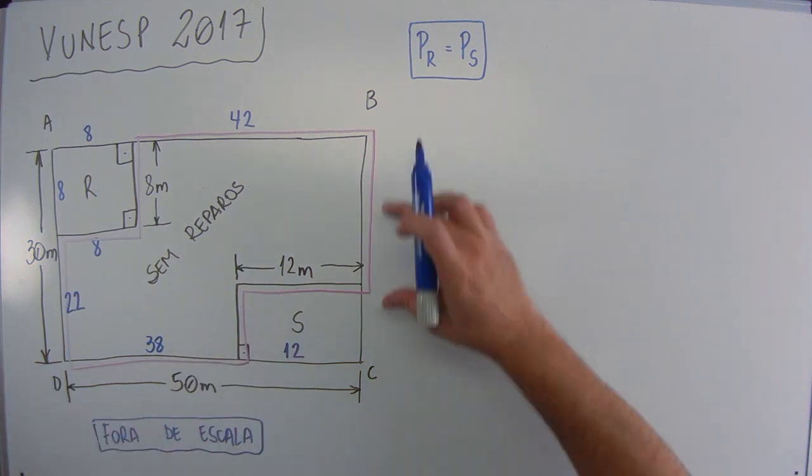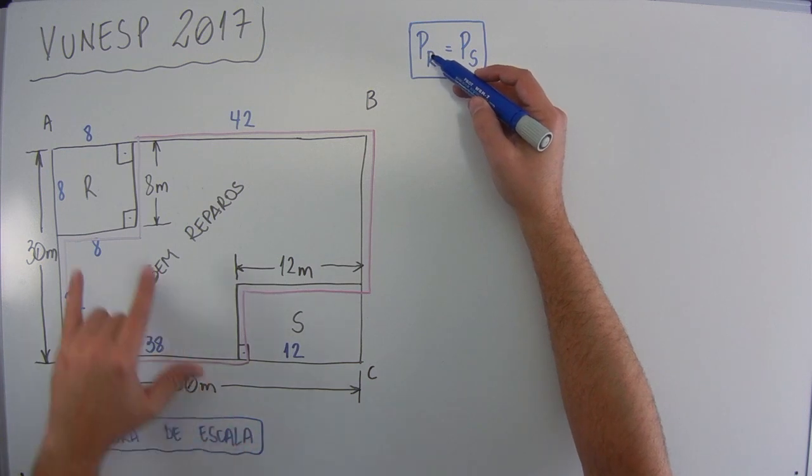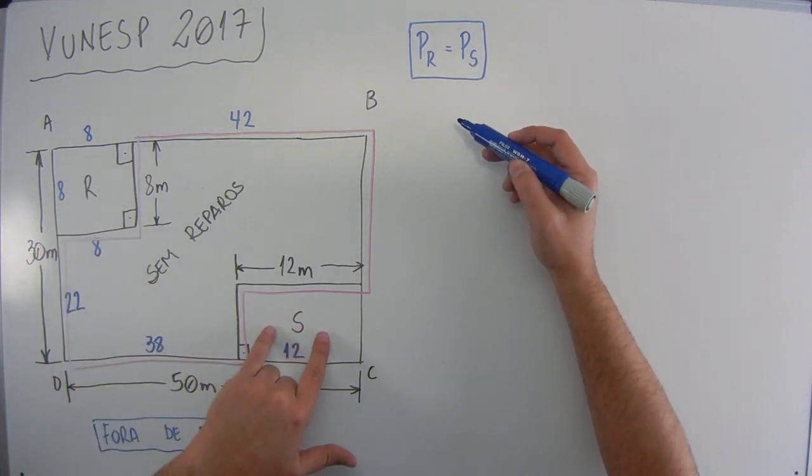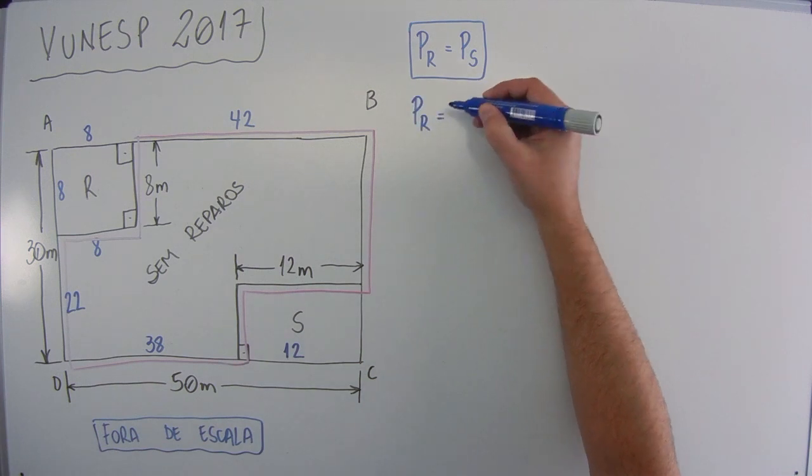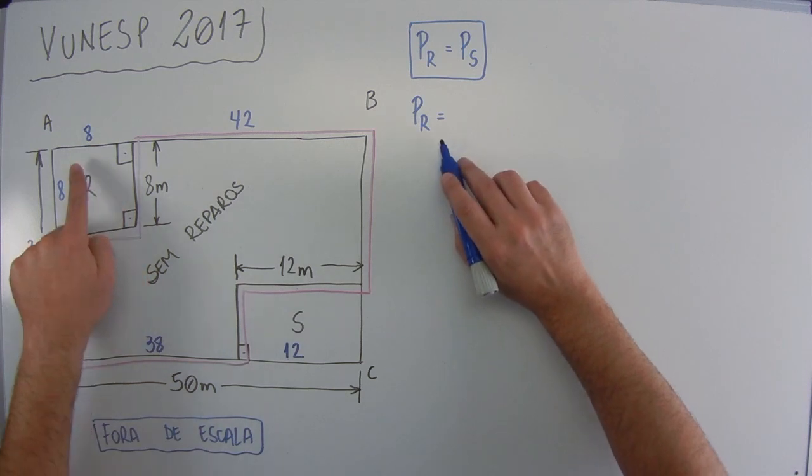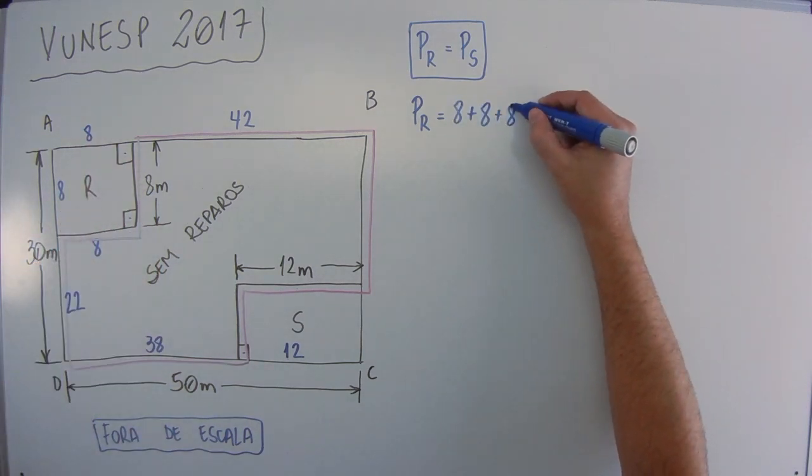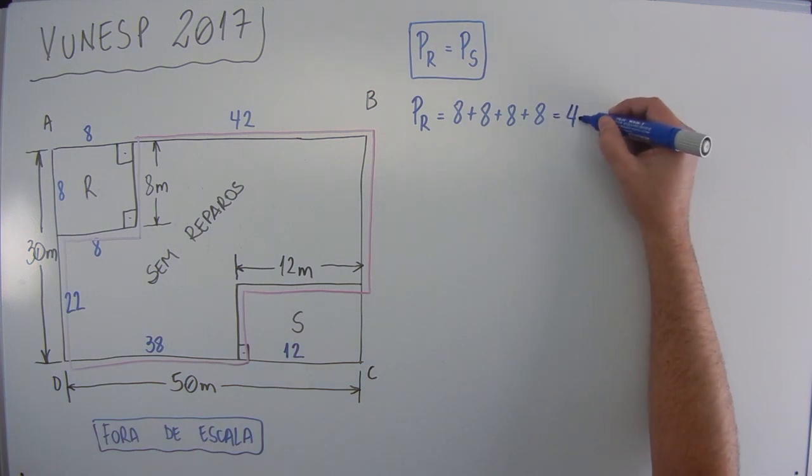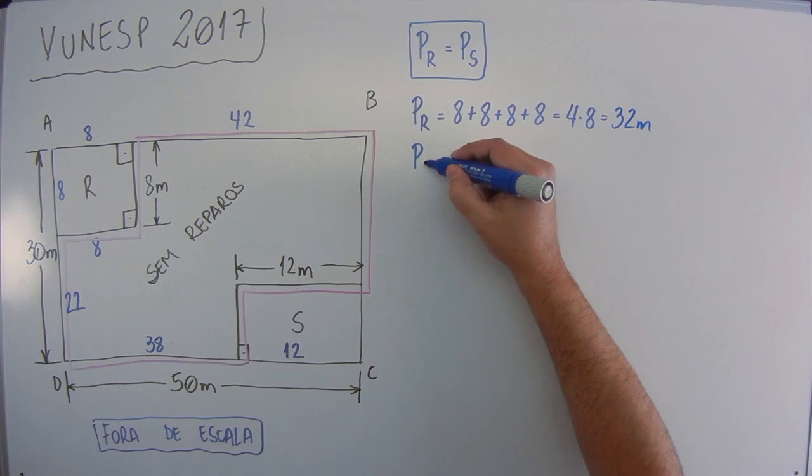Falta esse pedaço e esse pedaço que a gente não sabe. Mas ele disse para a gente que o perímetro de R é igual ao perímetro de S. Vamos calcular o perímetro de R. Vai ficar perímetro é a soma de todos os lados ou o contorno da figura. Então o perímetro de R é somar 8 mais 8 mais 8 mais 8. Ou 4 vezes 8, que vai dar 32 metros.